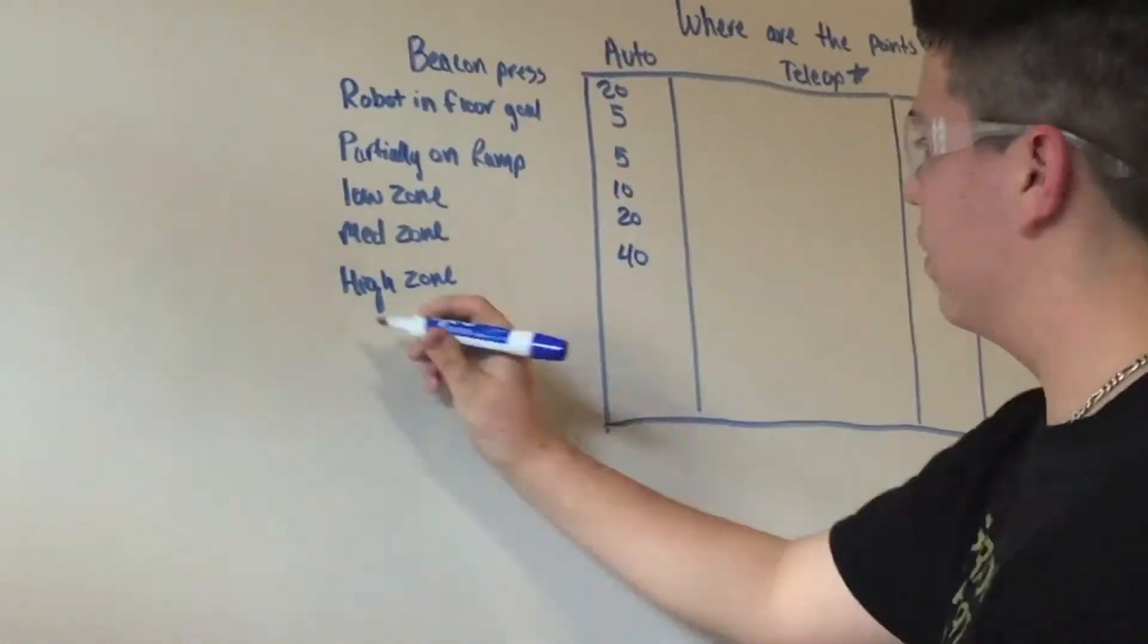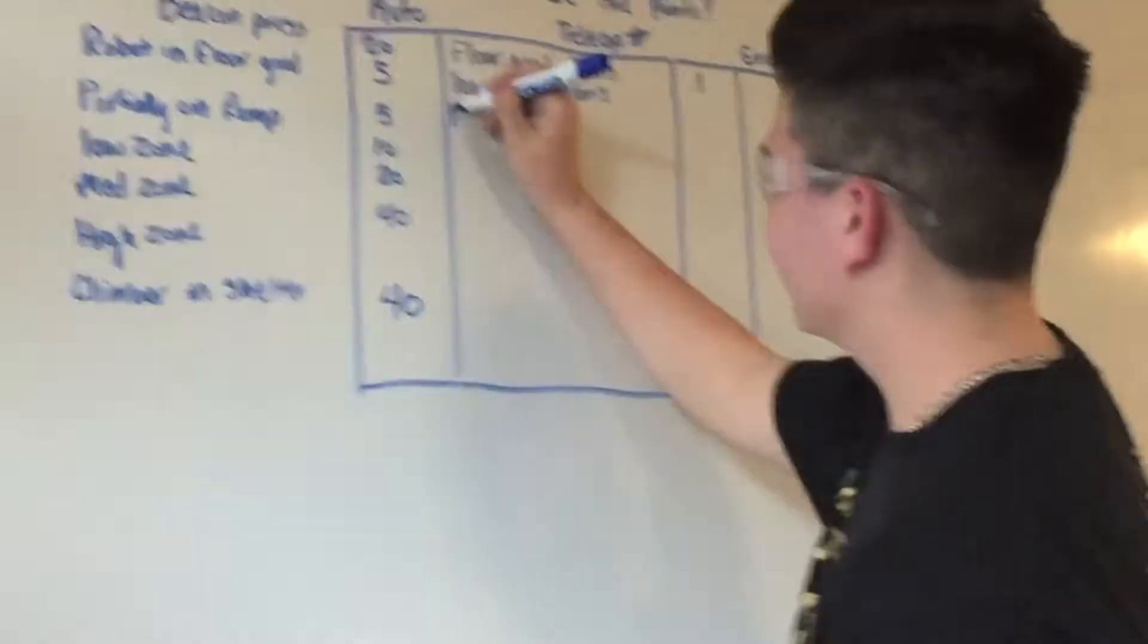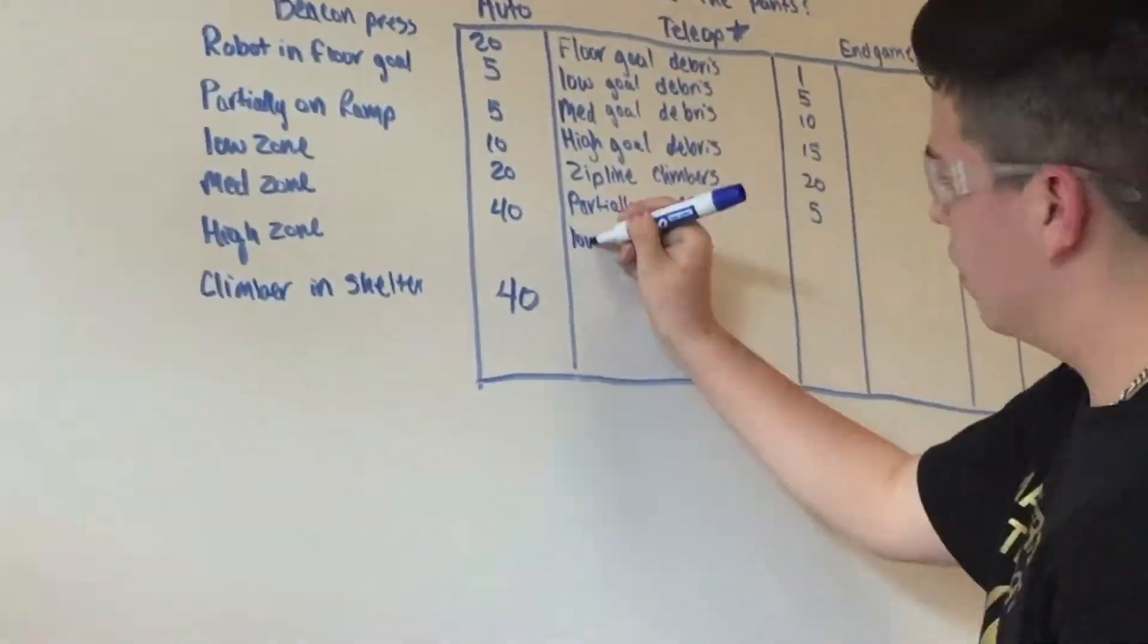We conducted a detailed point analysis at the start of the season and decided to focus on the bins, where the most points were. We built our robot around this central strategy.